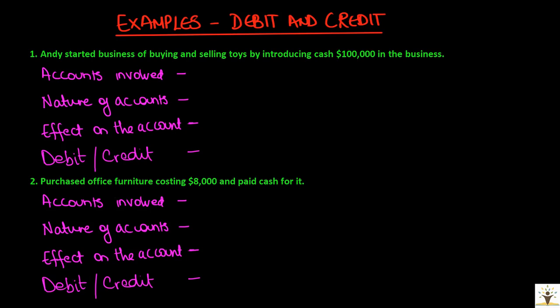Our first transaction: Andy started a business of buying and selling toys by introducing cash $100,000 in the business. First we need to identify what accounts are involved. When Andy introduces cash in the business, the asset cash increases — so cash will be affected. Since Andy is the owner bringing in personal assets, capital account will also be affected. Cash is an asset account and capital will be capital.